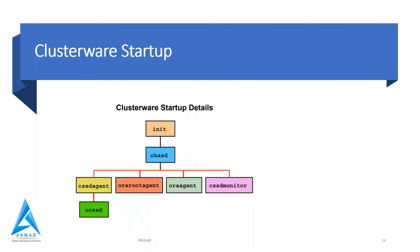Today I will go in detail about clusterware startup. In the last session I covered this, but did not explain each and every process. The first process is the init process, which starts OHASD - that is Oracle High Availability Services Daemon. OHASD is responsible for starting all right processes, monitoring and restarting other Oracle Clusterware daemons, and starting the CRSD daemon, which in turn manages cluster-wide resources.